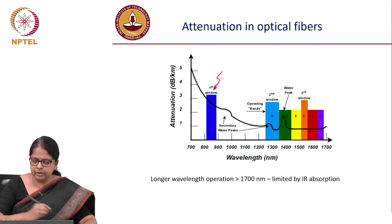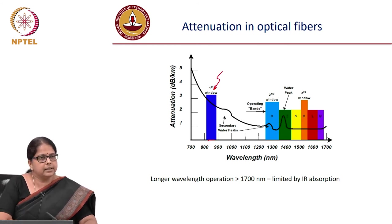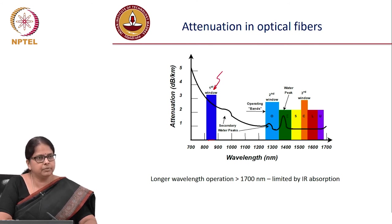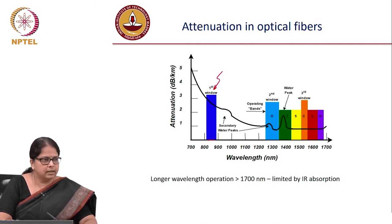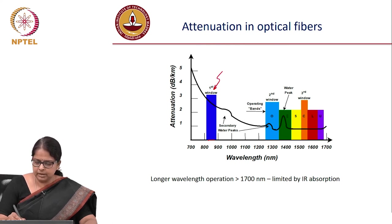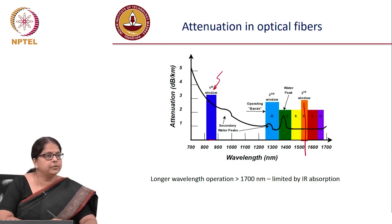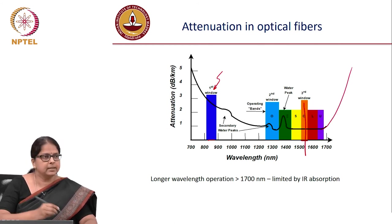Initially the ~800 nm window was used because transmitters and receivers were readily available there, making it the first communication window. It is still used for short-distance communication due to low-cost components, though attenuation is roughly 2–2.5 dB/km. Today, C-band (1530–1560 nm) is used for long-distance communication.